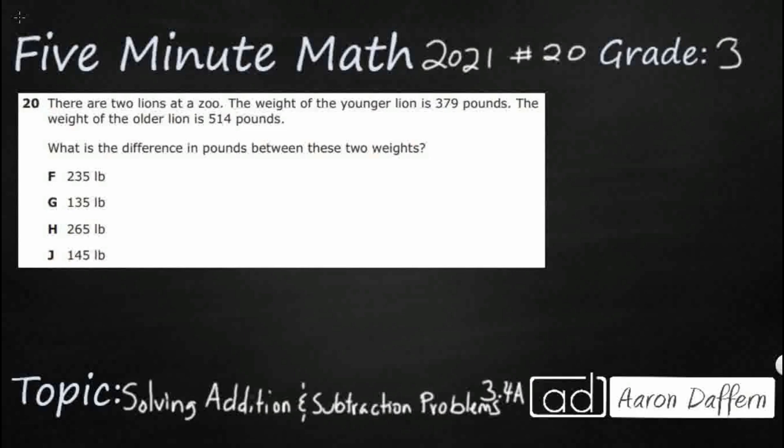So we have two lions at the zoo. The weight of the younger is 379 pounds. The weight of the older is 514 pounds. What is the difference? There's our key word right there. Difference in pounds between these two weights.